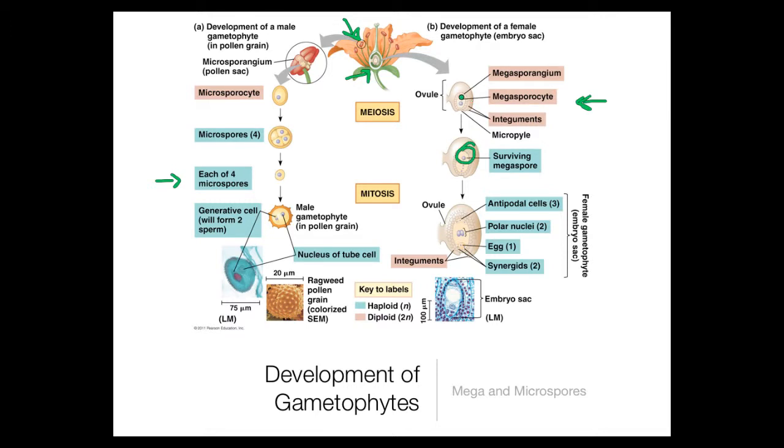Even though this divides forming I believe four megaspores, only one of them is going to survive, the other ones are going to die. That one megaspore is going to go through a series of divisions giving the following pieces: the antipodal cells, which are three little cells that hang out up here at the top.